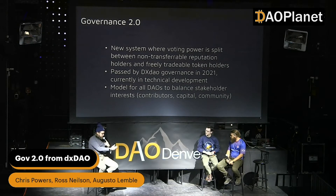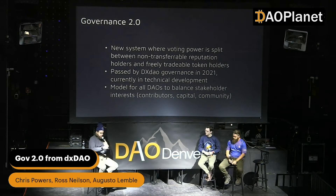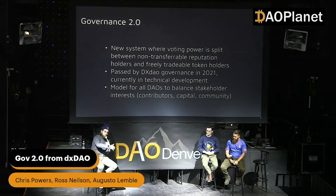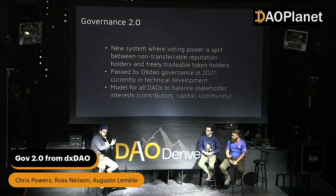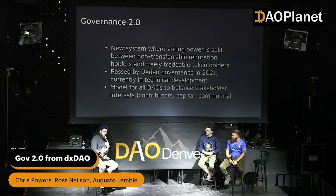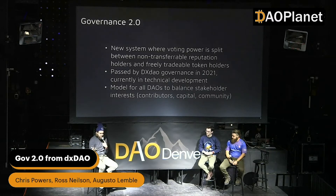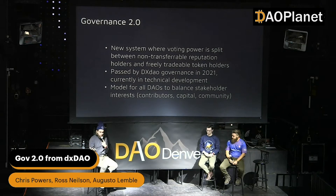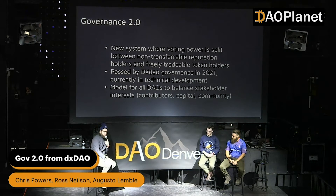We think it's awesome for DXDAO and we're building it, but we also think this is a model for all DAOs going forward. We're coming at it from the reputation side wanting to introduce token governance, but other communities may come at it from the other direction. You already see this — curve's token locking for four years is very similar to non-transferable governance.